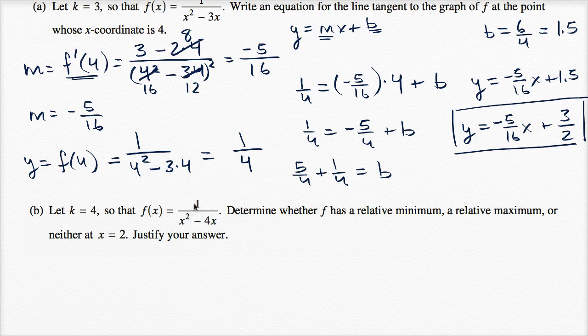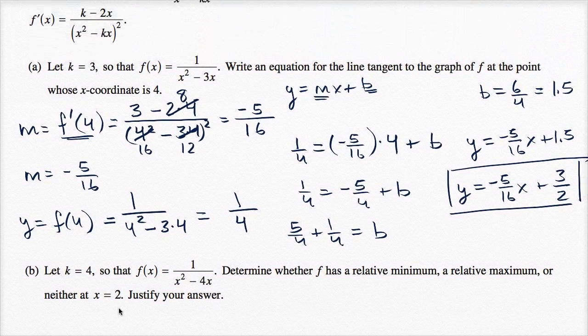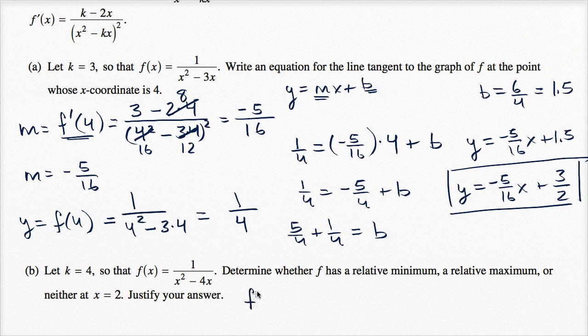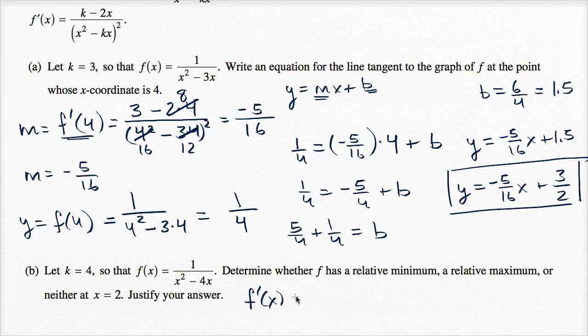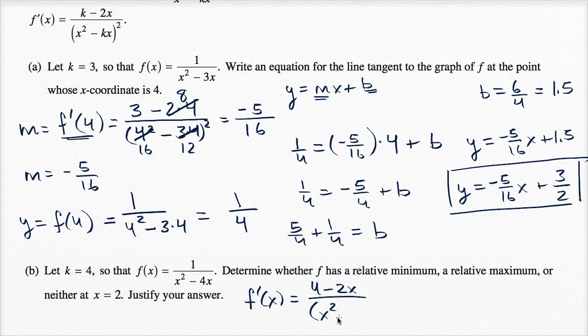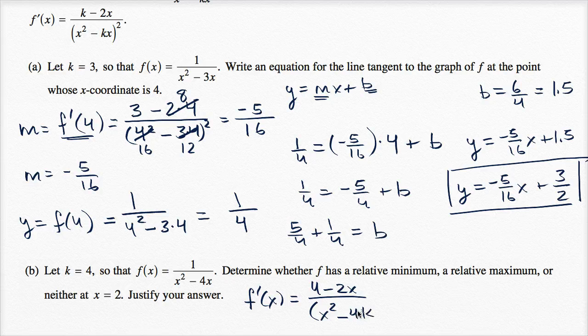Well, if f of x is equal to this, then f prime of x - they gave us f prime of x in terms of k - so f prime of x is going to be equal to, in this case k is four, so it's gonna be four minus two x over x squared minus four x squared. So now we know f of x and we know f prime of x.